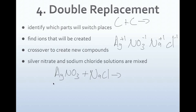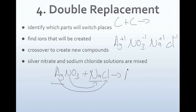The metals switch places: silver is now bonded to chlorine, and nitrate is bonded to sodium. We re-crisscross on the product side. Silver and chlorine both have one oxidation number, giving us AgCl. Sodium bonds to nitrate, giving us NaNO3.